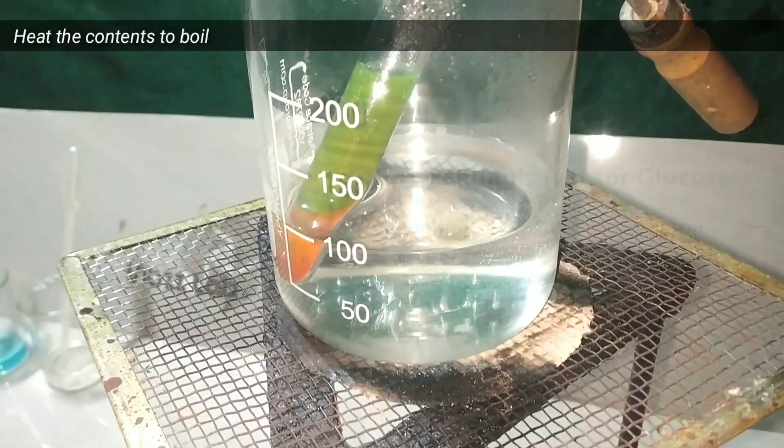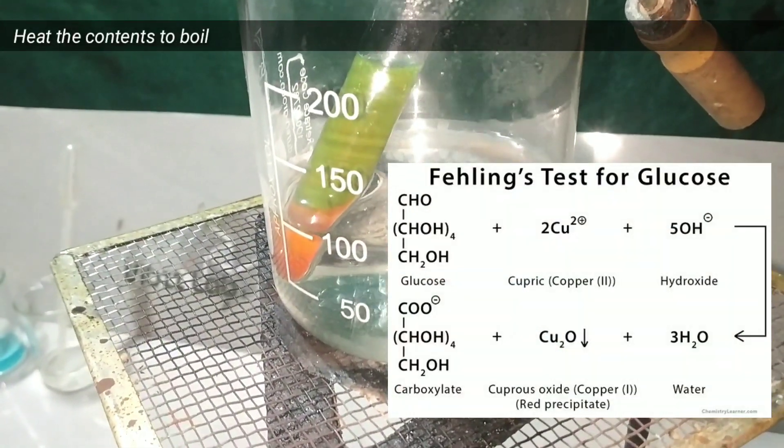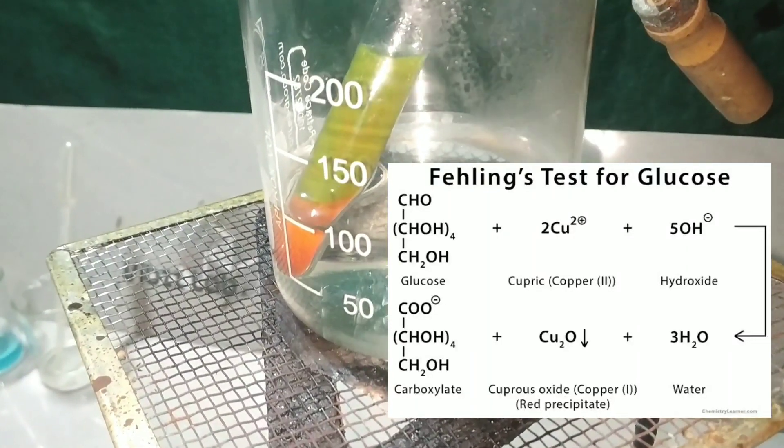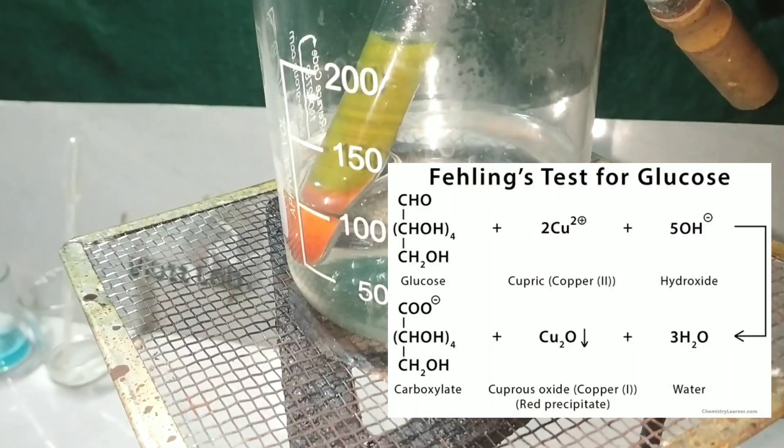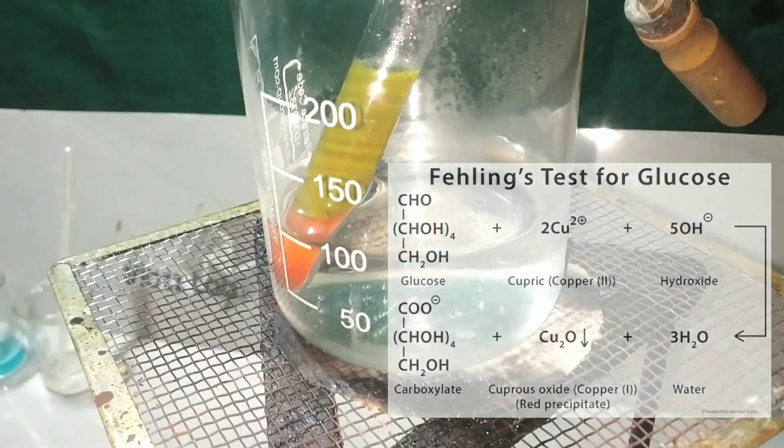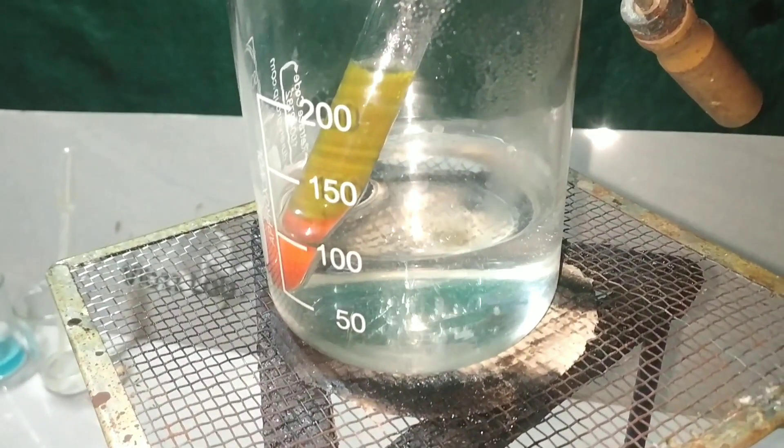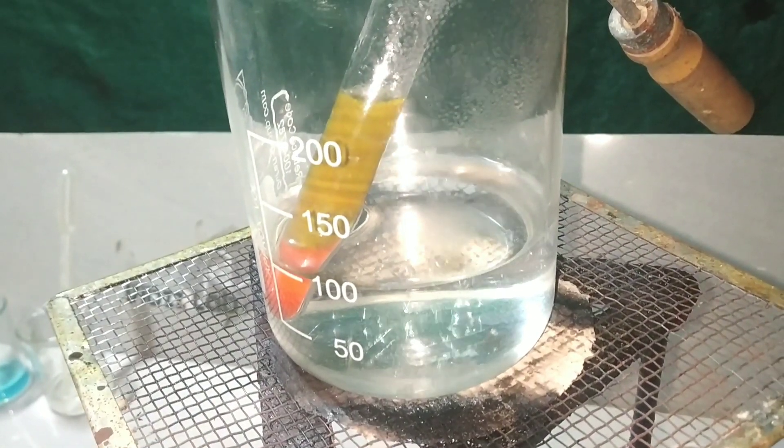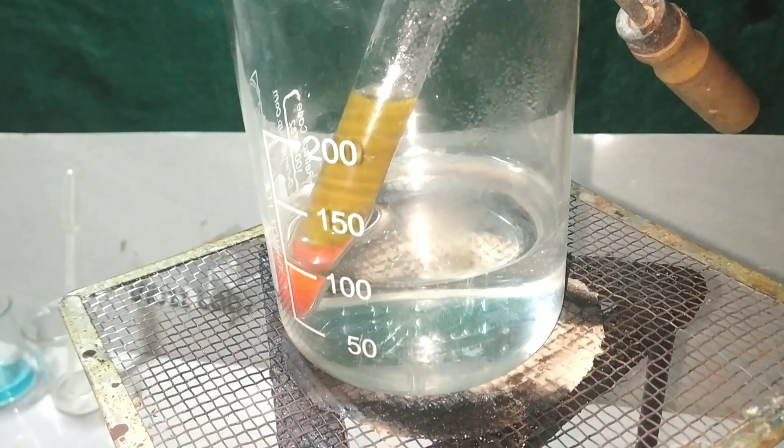Now we place the test tube in boiling water bath for few minutes and immediately you see a color change which is similar to the Benedict's test. The Bis-Tartarito-Cuprate-2 complex is an oxidizing agent which oxidizes glucose to gluconic acid and itself gets reduced to copper oxide.